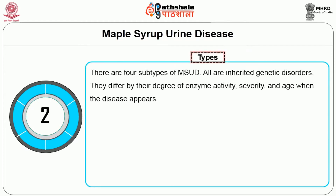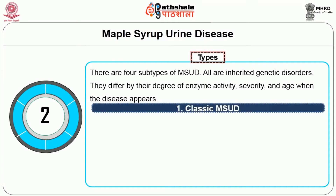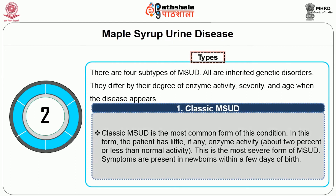There are four types of MSUD, all inherited genetic disorders, differing by degree of enzyme activity, severity, and age of onset. The first type is Classic MSUD, the most common form, in which the patient has little if any enzyme activity — about 2% or less. This is the most severe form of MSUD, with symptoms present in newborns within a few days of birth.